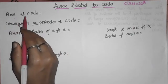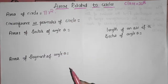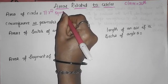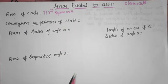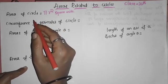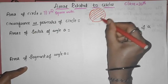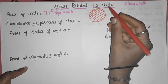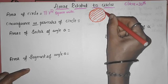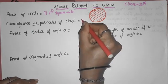First one: area of circle. We know area of circle is pi r square — we have learned this one. So this is the area of the circle, this is in square units. The area is always in square units. So then we have already learned circumference or perimeter of circle. The perimeter or circumference of circle is 2 pi r.